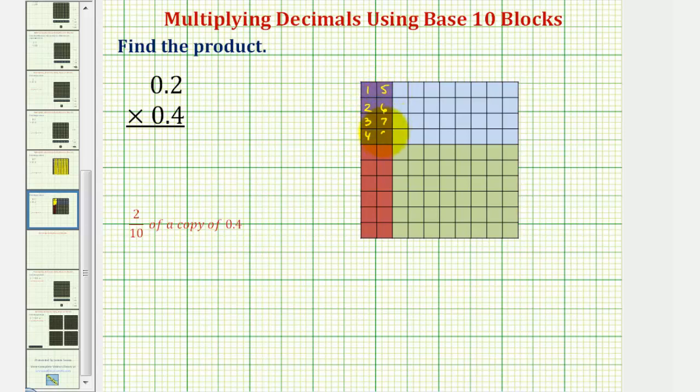6, 7, 8 of those partitions, which means our product is 8 hundredths. 2 tenths times 4 tenths equals 8 hundredths.